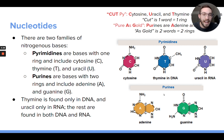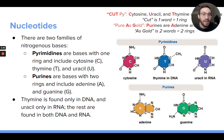Those nitrogenous bases fall into two different categories: some have a single ring structure and some have a double ring structure. There's also uracil — if we were talking about RNA, uracil is a nitrogenous base found in RNA nucleotides. But in DNA, there are those four: C, T, A, and G.